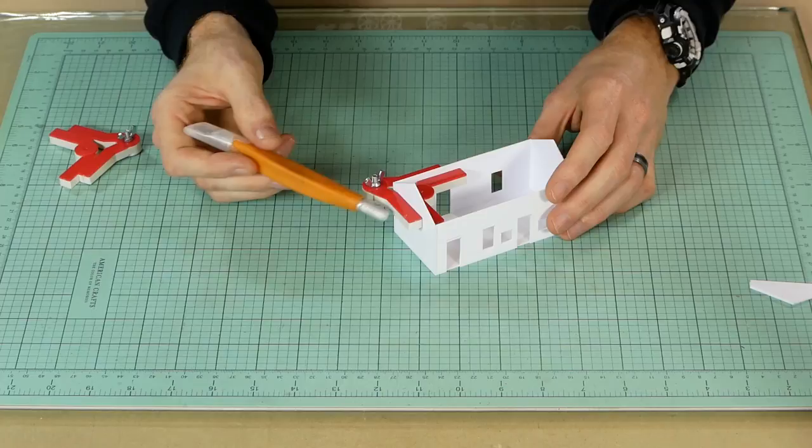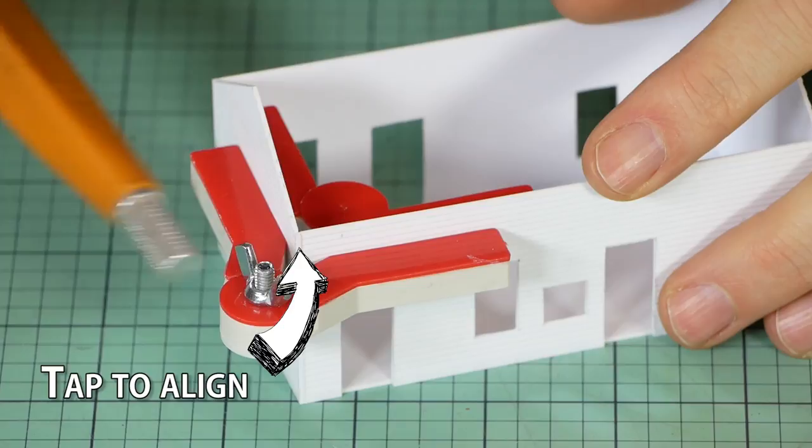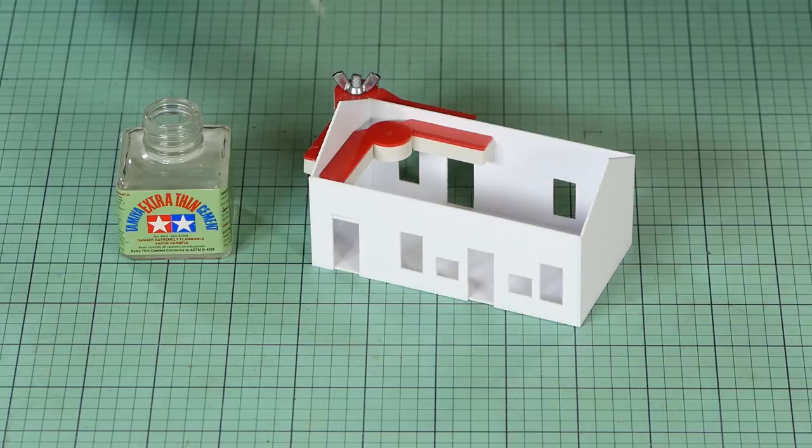Gently line the clamp up against the wall section and let the magnets do all the hard work. Lightly tapping the walls all that's needed to line them up and once it's perfectly aligned simply apply a small amount of plastic cement.